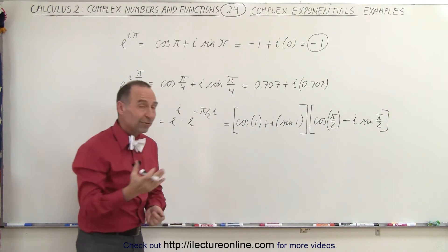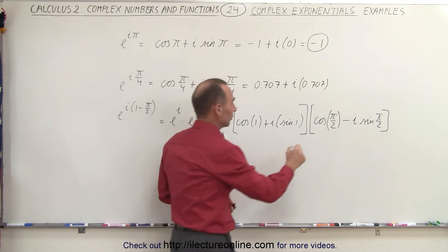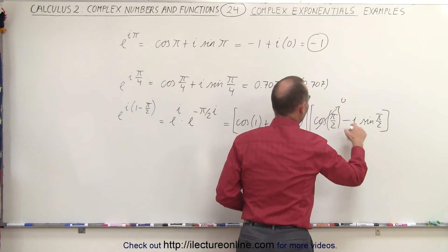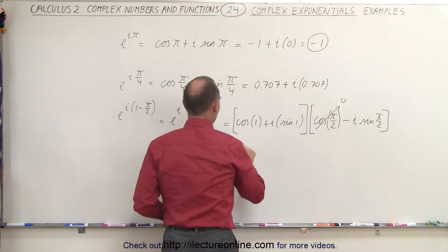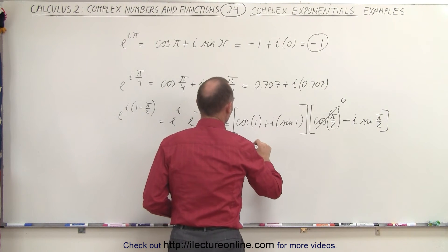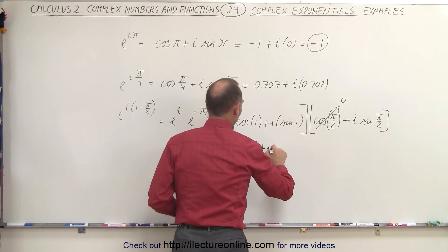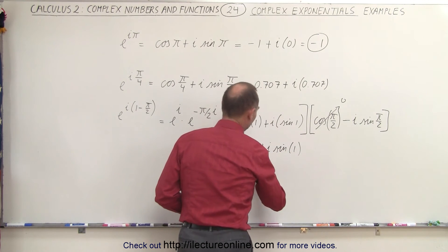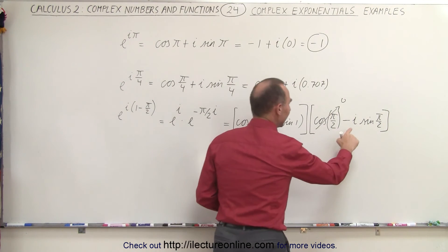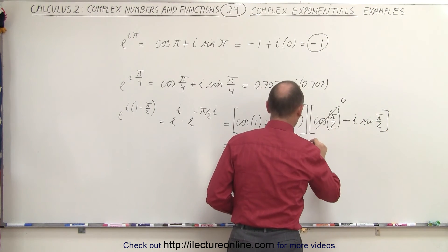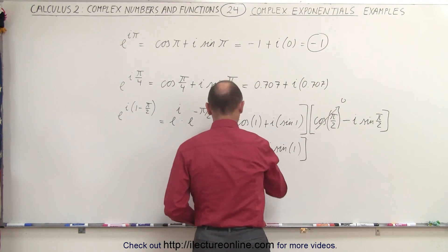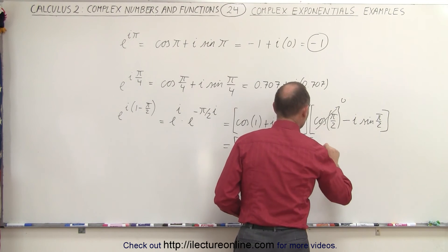All right, well, the cosine of pi over two, that's equal to zero, so that disappears. And the sine of pi over two is equal to one, so this can be simplified to the cosine of one plus i times the sine of one. Of course, these are radians, and then this becomes equal to the sine of pi over two is one, so that's times a negative i.